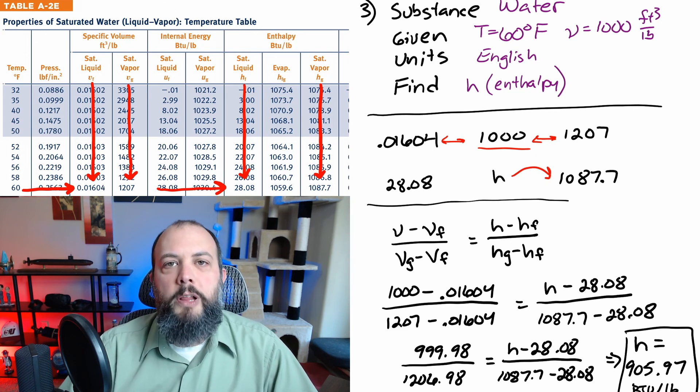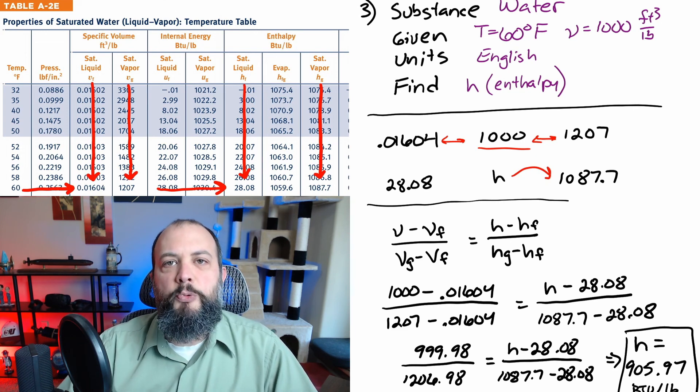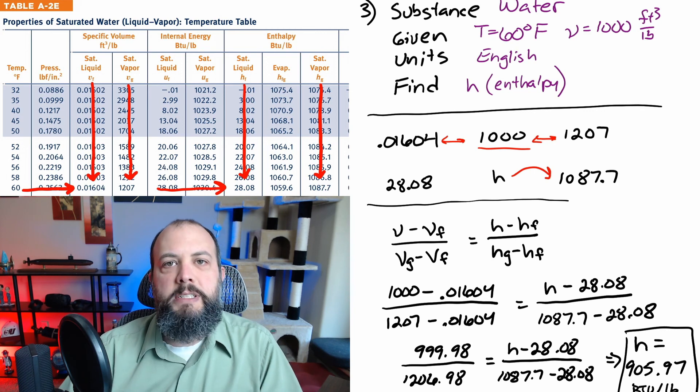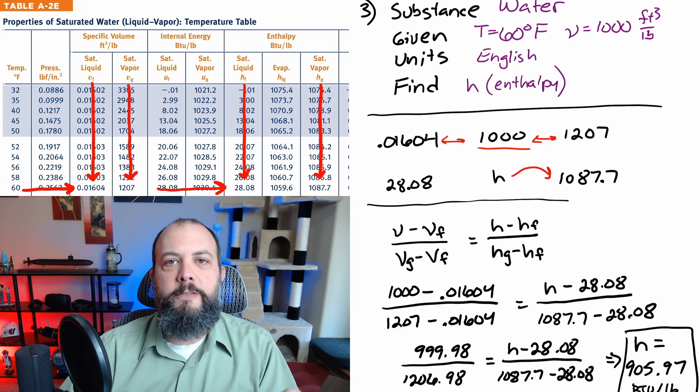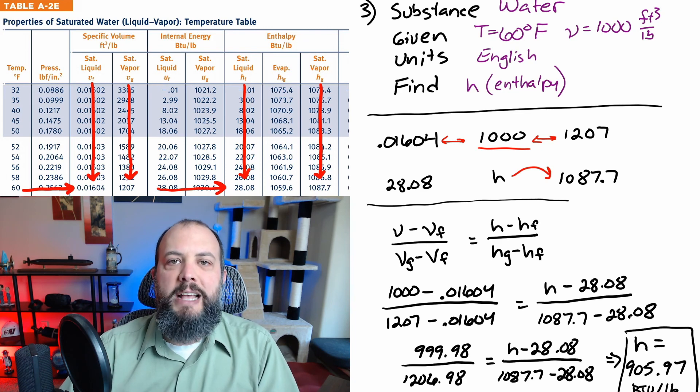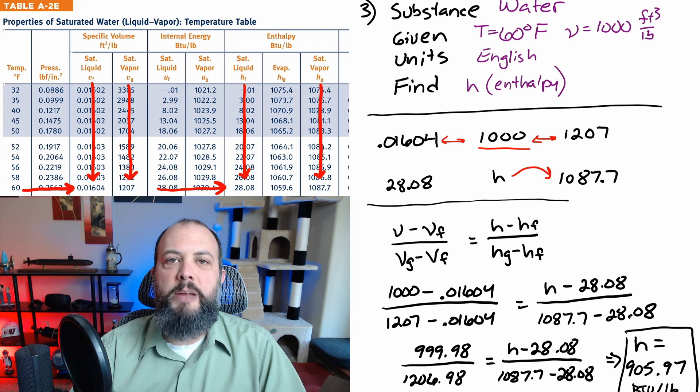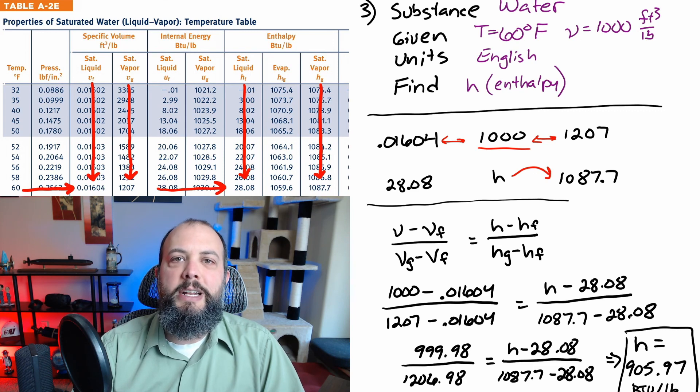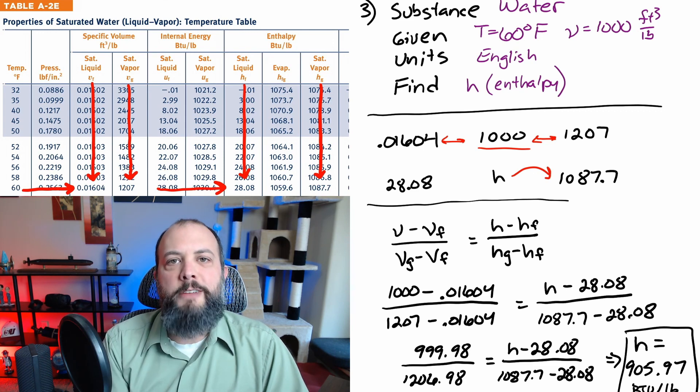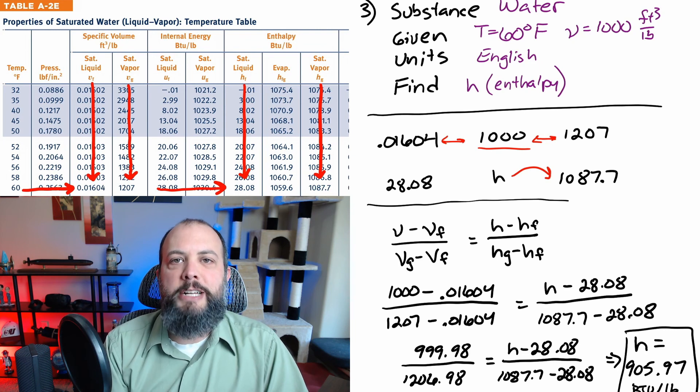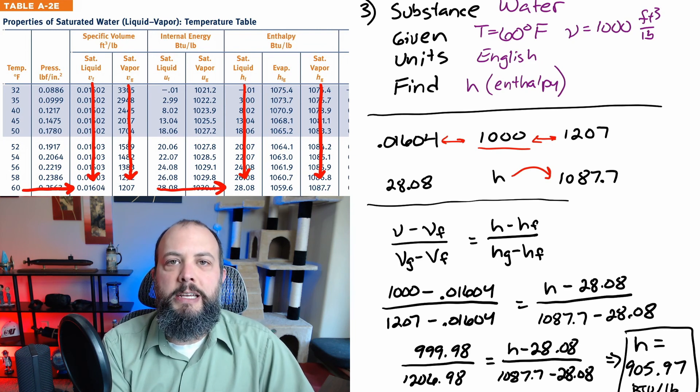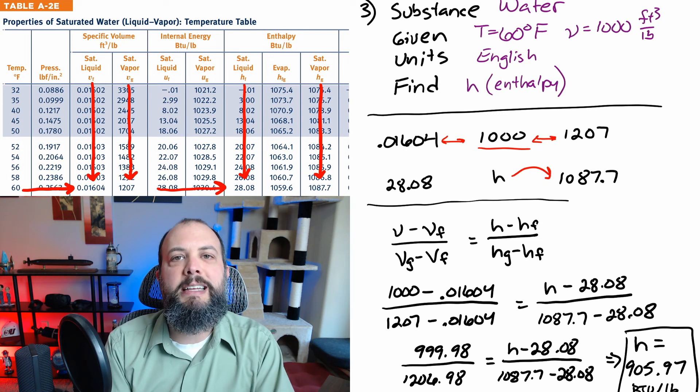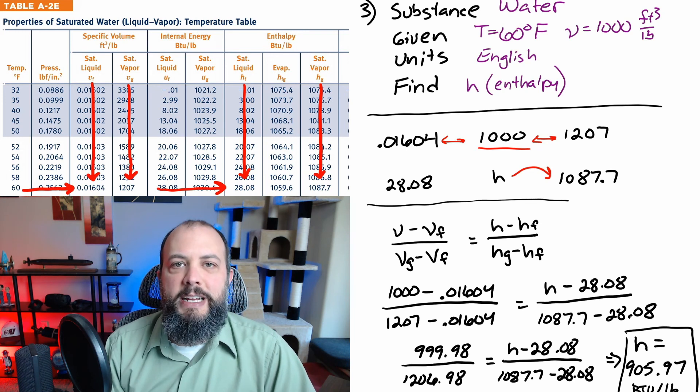So if you're starting to notice a trend so far for all of these problems, we always set up a ratio with a smaller number on top which is the number we're either given or need to find with reference to the fluid value and then the denominator of your ratio has the total gap from the saturated vapor to the saturated fluid. And you can always check your answer at the end because your final answer should always fall in between the saturated liquid and saturated vapor values. And if you're given value was closer to the saturated liquid, your final answer should be closer to saturated liquid. If you're given values closer to saturated gas, then your final answer should also be closer to the saturated gas.